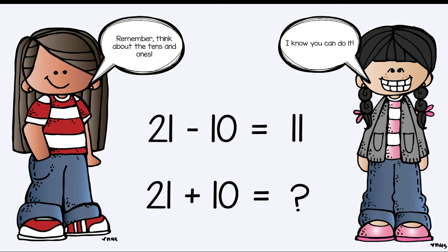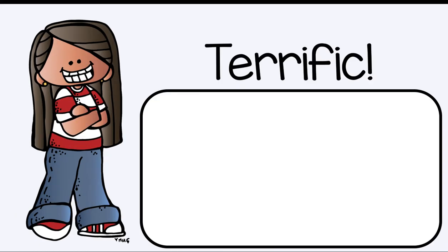21 minus 10. Great job, kings and queens, is 11. Remember, draw your quick picture. 21 plus 10 is equal to what? 31. Great job, kings and queens. Terrific.